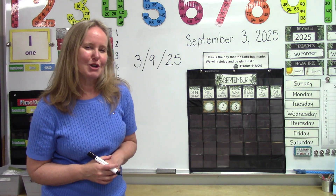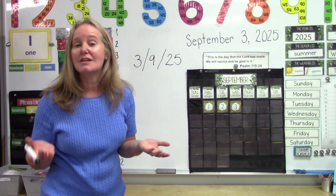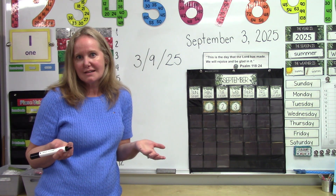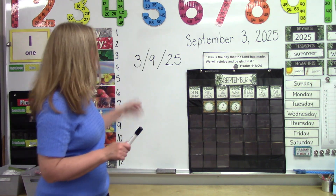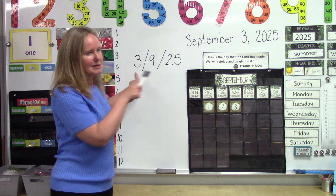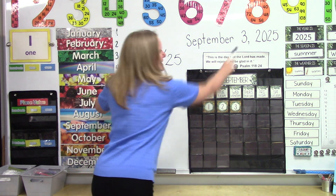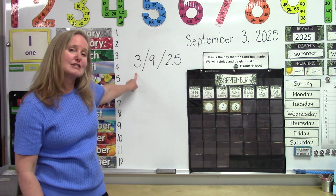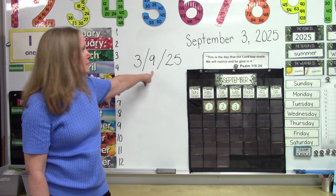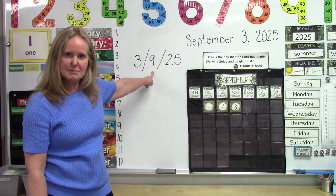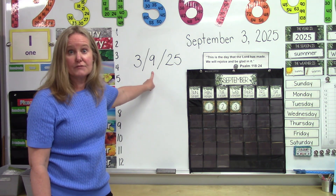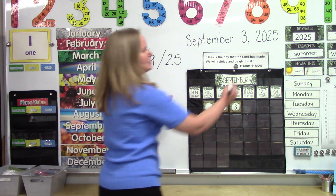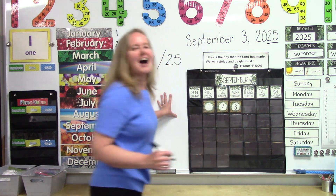Could you figure out why I wrote the date with these numbers? How did I know which ones to write? The 3 indicates that it is the third day of the month — the third of the month of September. I used a 9 for September, and then 25 is the last two digits of the year.